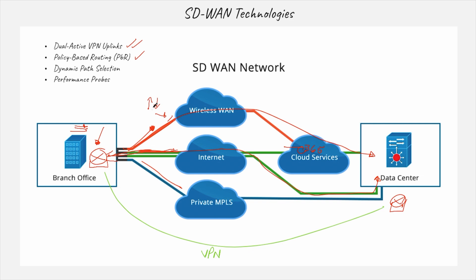After that we have dynamic path selection. This means the device can intelligently sense conditions and act. For example, for application one from the branch office, you want to use the internet first. But if the internet is not good enough based on your parameters, use the wireless WAN — reserving the private MPLS for something else. And if those two are not good enough, then use the private MPLS for that traffic. You can configure this per application, and app two could have a completely different order.